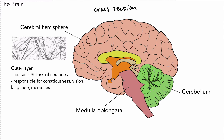The cerebral cortex contains many billions of neurons. Here are some neurons on screen — they're actually more densely packed than shown in this image, but that's roughly what they look like. They are joined together with many many connections, and that allows the brain to carry out all its complex functions. Examples of these complex functions include consciousness, vision, language, memories, and more — this is the higher level thinking that the cerebral hemispheres carry out.